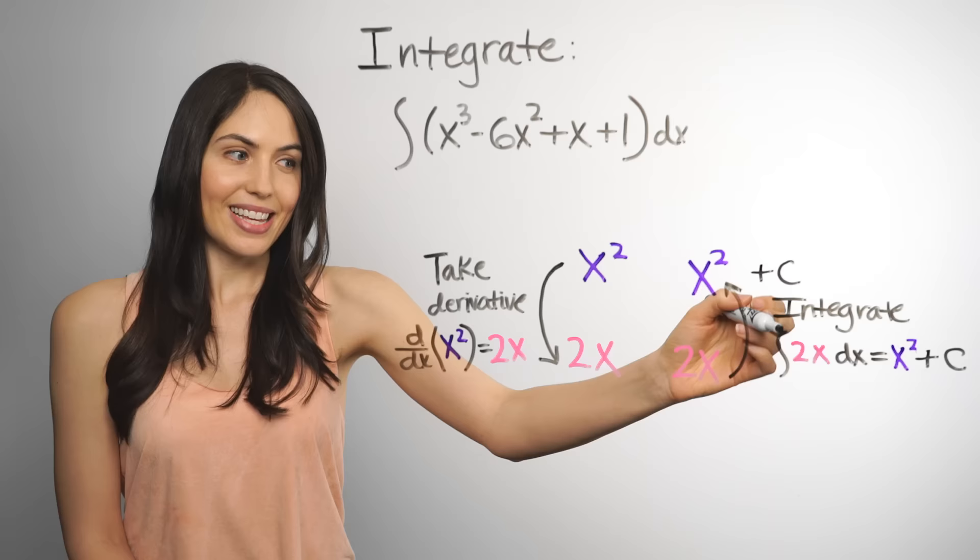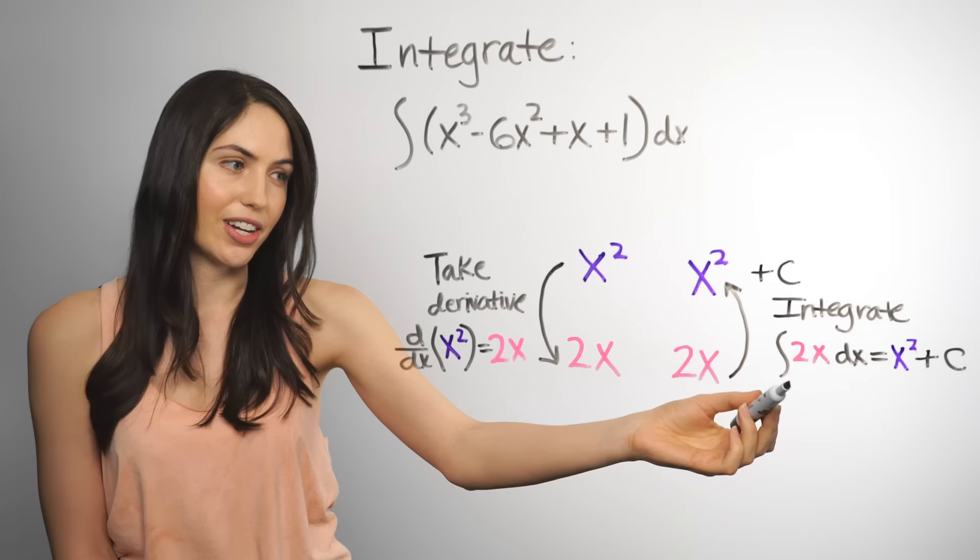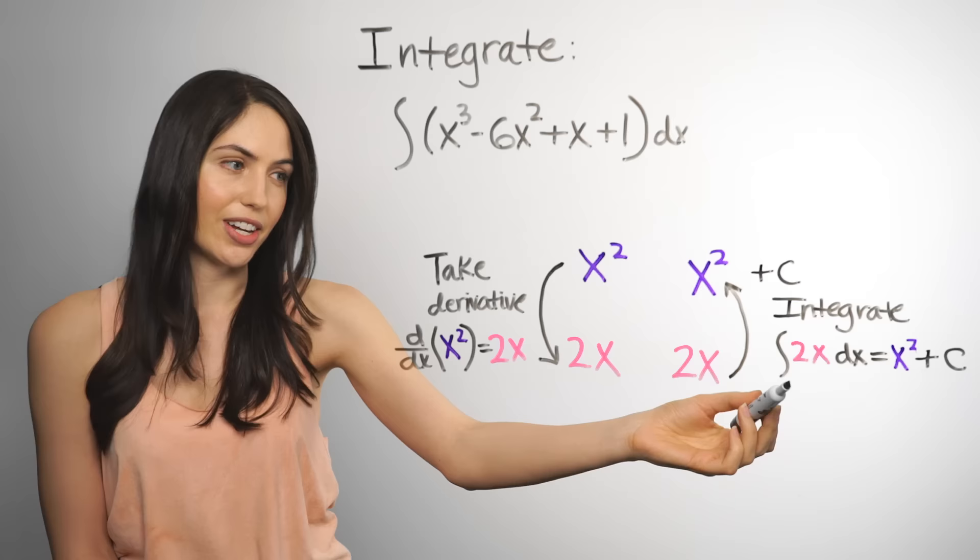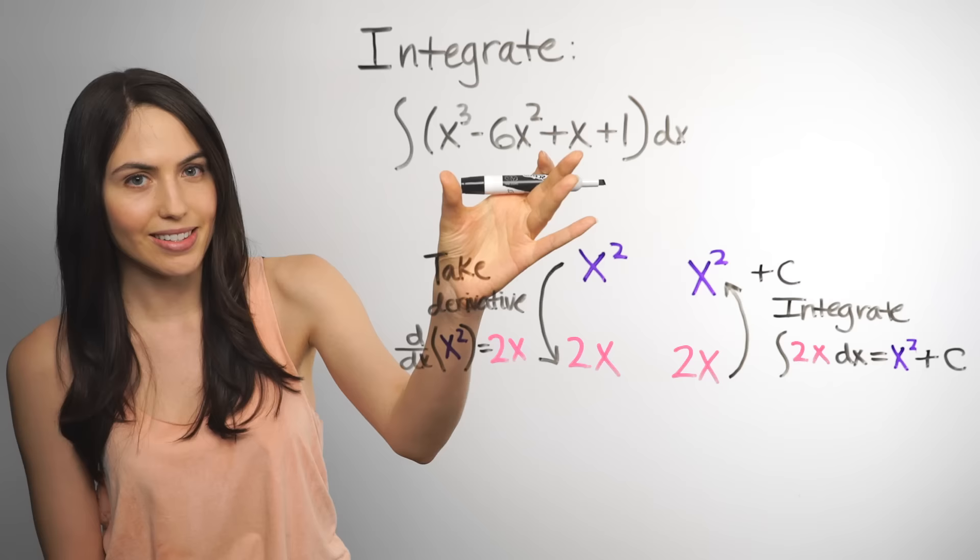This reads as the integral of 2x with respect to x. The dx differential just tells us that x is our variable of integration, that we're integrating with respect to x and not some other variable. And I will explain the plus c in a bit.